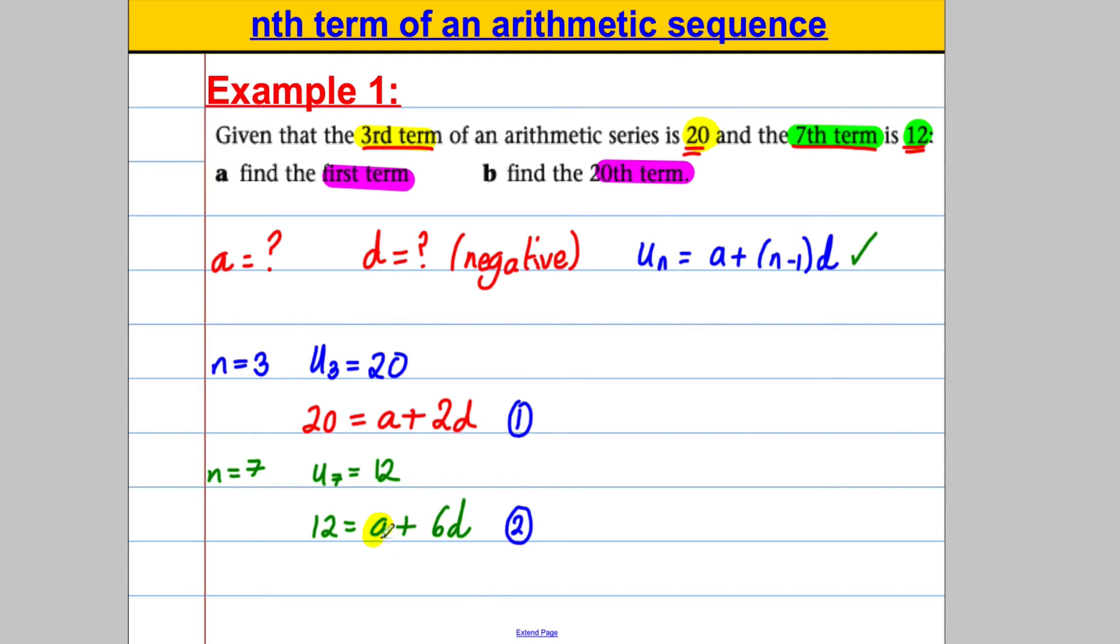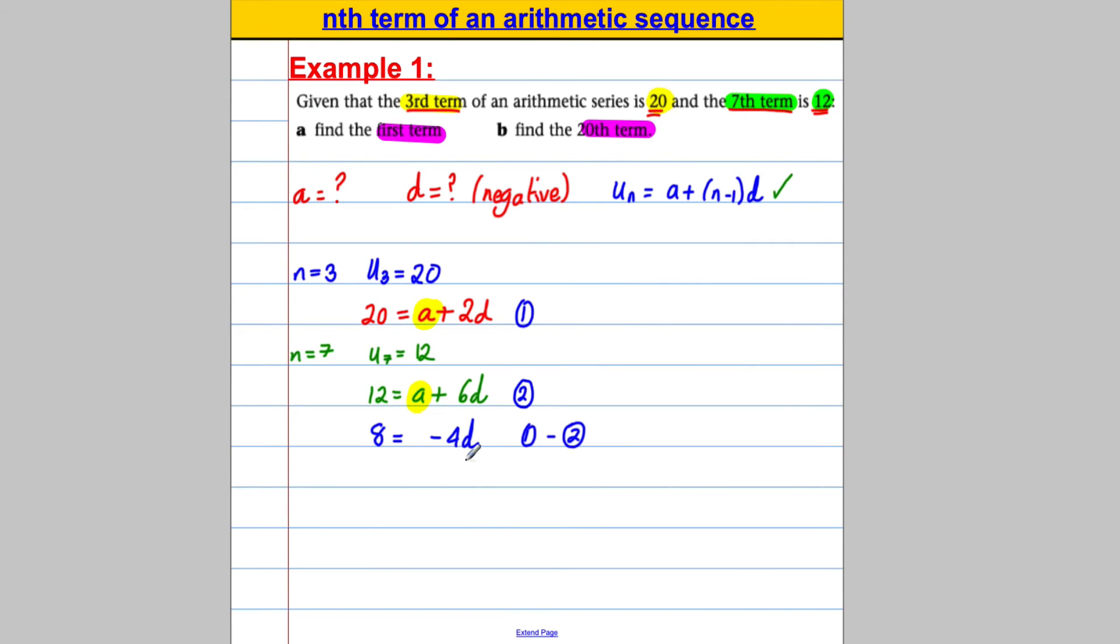Now because I have one a here and one a here, I could just do equation 1 subtract equation 2, right? And it would eliminate the a and just leave me with an equation with d that I could solve. Okay, so let's have a go just carefully. Equation 1, 20 take away 12 is 8 and that must equal a take away a is nothing. Now be careful, 2d subtract 6d is negative 4d. So d, I divide both sides by negative 4, d is therefore equal to negative 2.